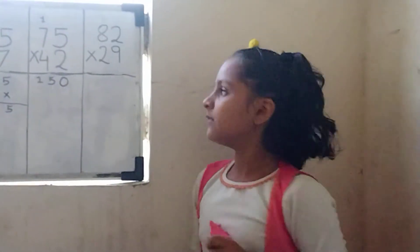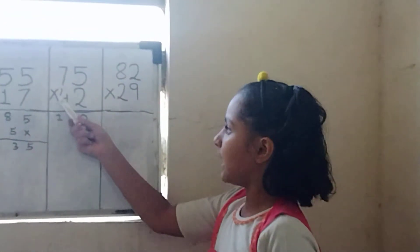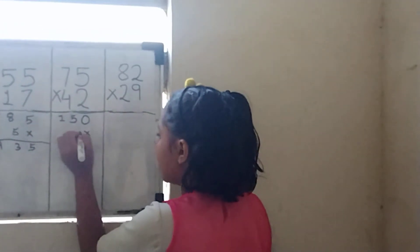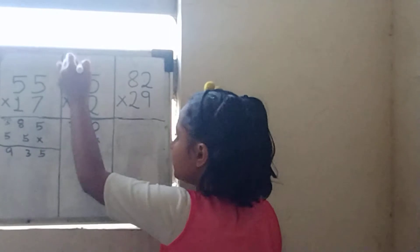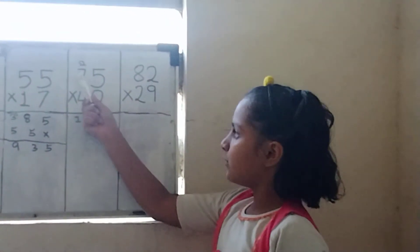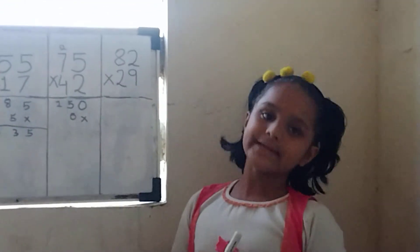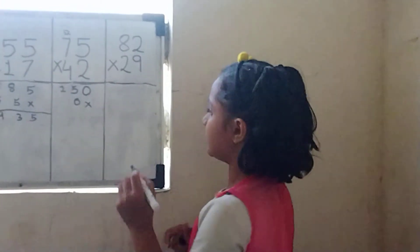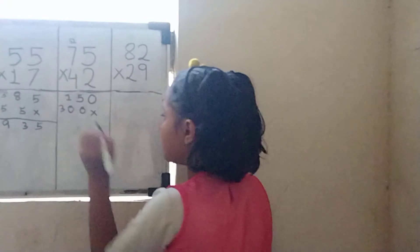Then we will multiply 4 multiplied by 5 equals to 20. Then we will write 0 here and 2 will be carried up. Then we will multiply 7 multiplied by 4 equals to 28, and plus 2 equals to 30. And we will write 0 here and 3 will be carried here.